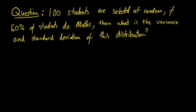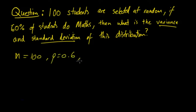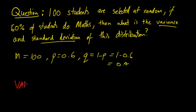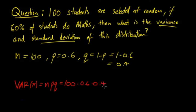Next part: 100 students are selected at random. If 60% of students do math, what is the variance and standard deviation of this distribution? We already know n = 100 and p = 0.6. We need to work out q, which equals 1 − p = 1 − 0.6 = 0.4. So the variance of X = npq = 100 × 0.6 × 0.4 = 24.